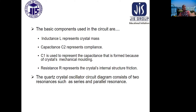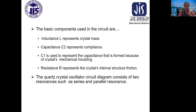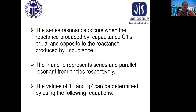The basic components of the crystal oscillator are: inductance; capacitance C2, which represents compliance; C1, which represents the capacitance formed due to the crystal's mechanical molding; and resistance R, which represents the crystal's internal friction. The quartz crystal oscillator circuit consists of two resonances — series resonance and parallel resonance. Series resonance occurs when the reactance produced by capacitance C1 is equal and opposite to the reactance produced by inductance L. FR and FP represent the series and parallel resonance frequencies respectively.